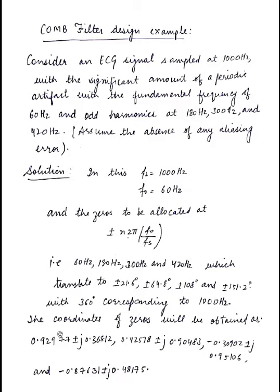You will get accordingly the coordinates of zeros as conjugate pairs. So first you will get at 0.92977 plus minus j 0.36812, these are two zeros, basically complex conjugate zeros. And then we have at 0.42578 plus minus j 0.90483, this is another conjugate zero. Then we have at -0.30902 plus minus j 0.95106. Then another two zeros are at -0.87631 plus minus j 0.48175.